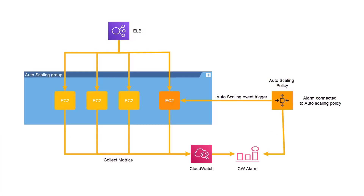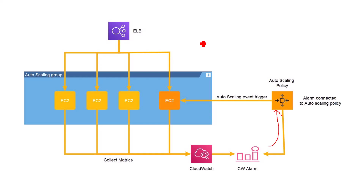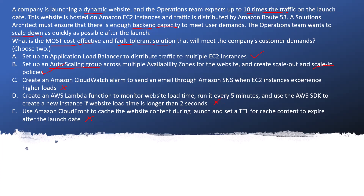I have added a slide showing an Elastic Load Balancer architecture: whenever we need to scale up, we can add EC2 instances. CloudWatch provides alarms which trigger the Auto Scaling policies, and accordingly it will scale up or down. So the correct answer is A and B. Let me know if you have any confusion. Thanks a lot.